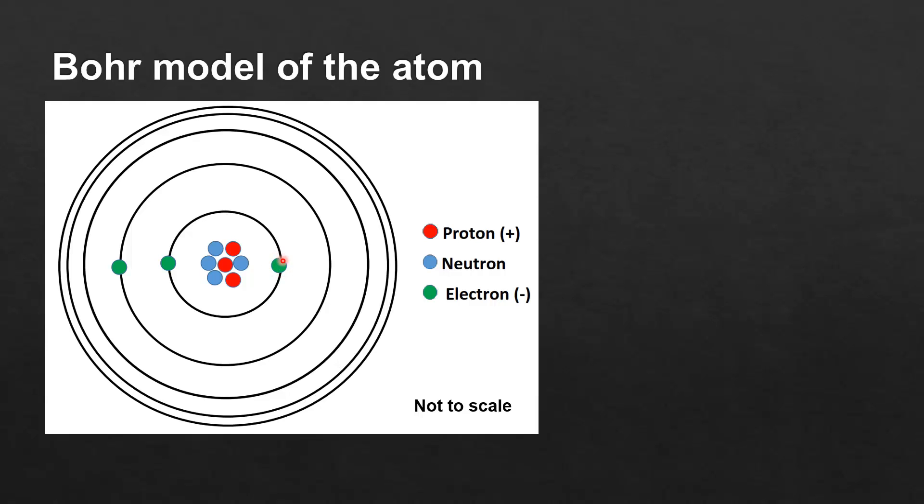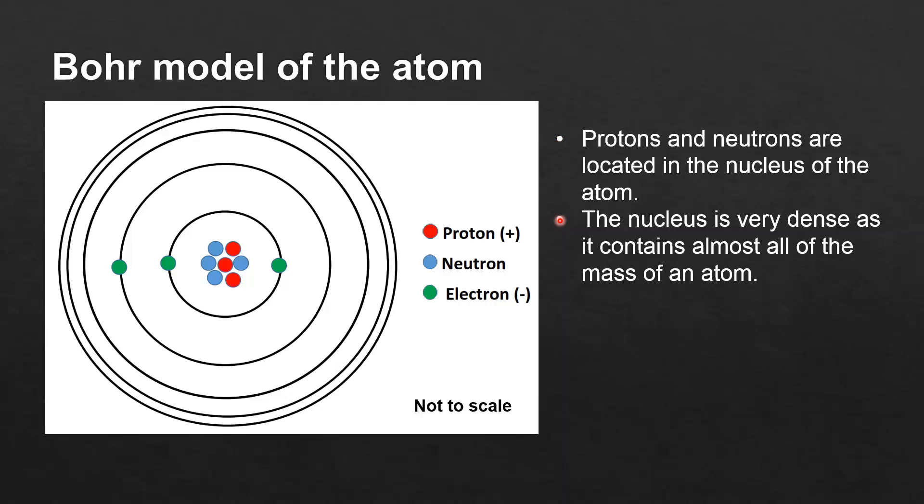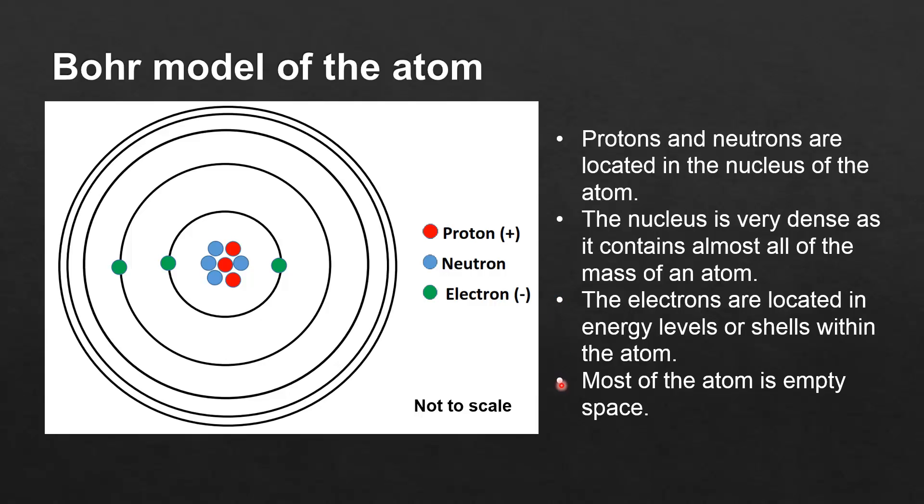So protons and neutrons are located in the nucleus of an atom. The nucleus is very dense as it contains almost all of the mass of an atom. The electrons are located in energy levels or shells within the atom. Most of the atom is empty space.